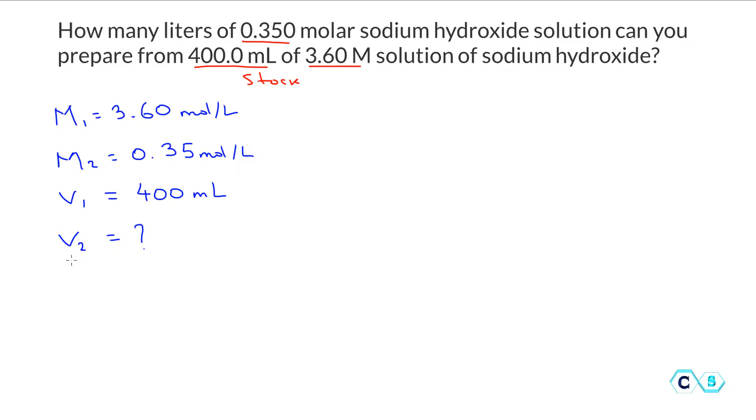So we're trying to find how many liters of that solution we can prepare. Here again we're going to use the formula for dilution which is M₁ times V₁ is equal to M₂ times V₂.